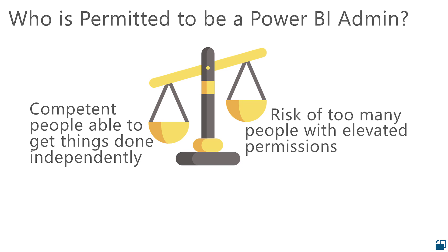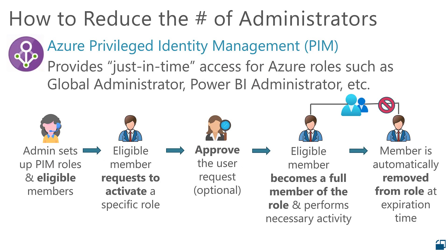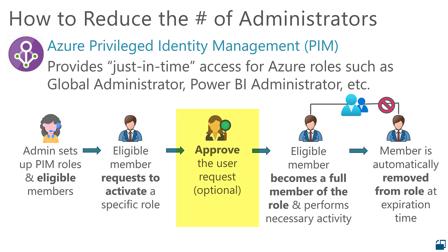But let's say you have a legitimate need for someone to have Power BI administrative access temporarily — they just don't need to permanently be a Power BI administrator. This is where a feature of Azure AD called Privileged Identity Management, or PIM, comes in. The Azure AD administrator sets up the relevant roles and eligible members. Our eligible member requests to activate the membership in the Power BI administrator group. Optionally, approval for this can be required, or if you don't want the delay of waiting for approval, the changes will all still be logged. Our eligible member becomes a regular member of the role and can proceed with whatever needs to get done.